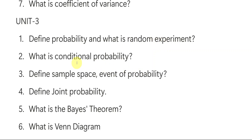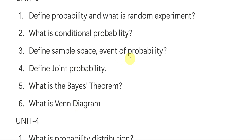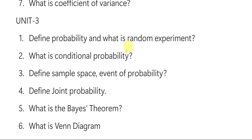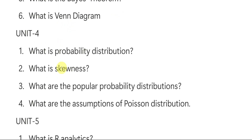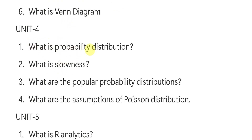From unit number three short questions: What is probability? What is a random experiment? What is conditional probability? What is sample space? What is an event of probability? What is joint probability? What is Bayes' theorem? What is a Venn diagram? These are the six short important questions from unit number three.